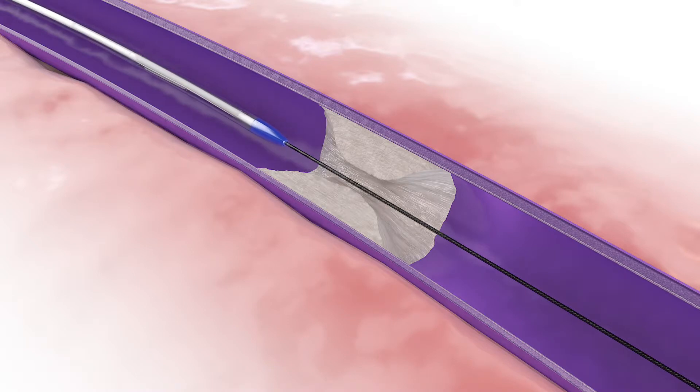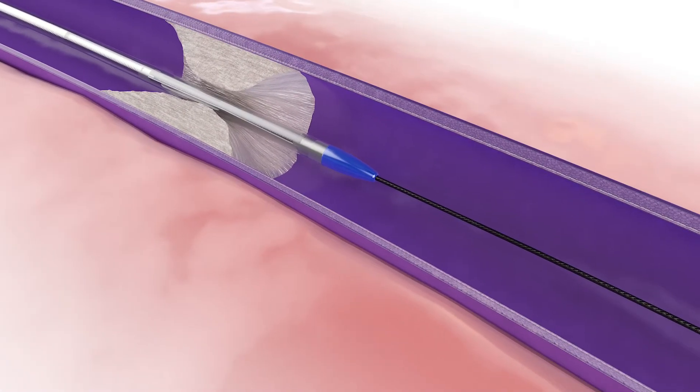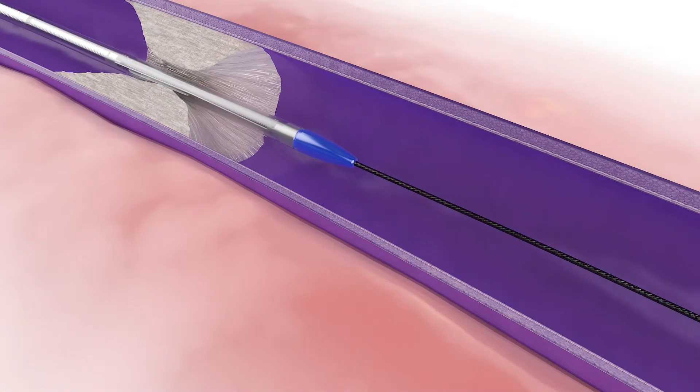Advance Flex through the area to be treated. Expose the distal vessel prep element by pulling back on the sheath actuator.